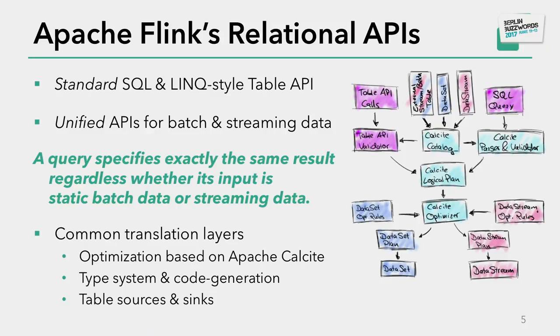Right now there are two different APIs: standard SQL and a so-called Table API, which is a language-integrated API for Java and Scala. Both of these are unified APIs for batch and stream processing, which basically means that if you specify a query, the semantics do not depend on whether the input is a stream or a batch input. It does not matter whether you read data as a stream or from a file — the result computed by the query will be the same.